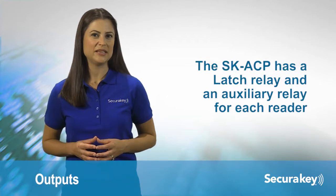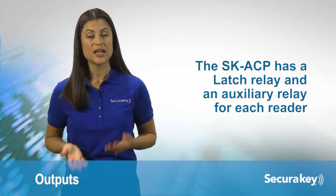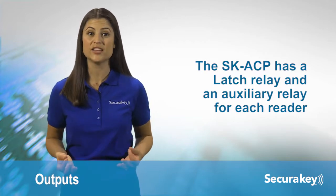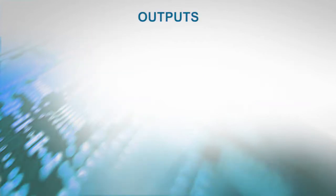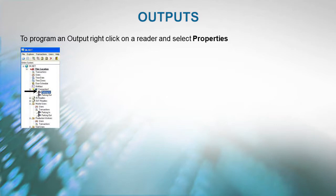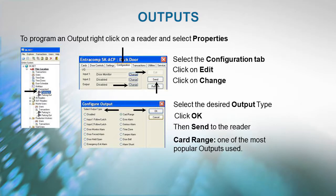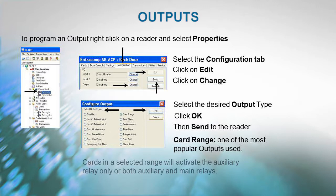The SKACP has a Latch Relay and an Auxiliary Relay for each reader. This Auxiliary Relay can be activated by a variety of means to accomplish various functions. To program an output, right-click on a reader and select Properties, select the Configuration tab, click on Edit, click on Change, select the desired output type, click OK, then Send to the reader. The card range is one of the most popular outputs — cards in a selected range will activate the Auxiliary Relay only, or both the Auxiliary and Main Relays. Typically this is used so specific cards can cause something special or extra to happen. The Relay can also be set to Toggle Mode.